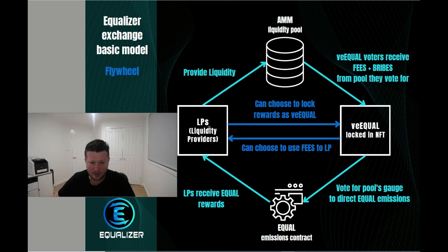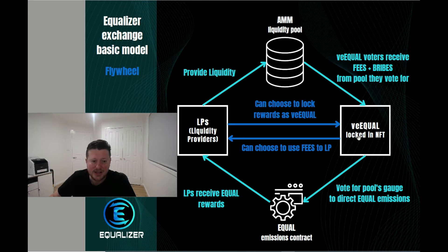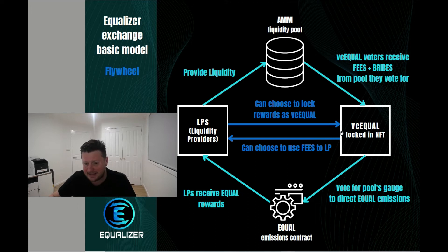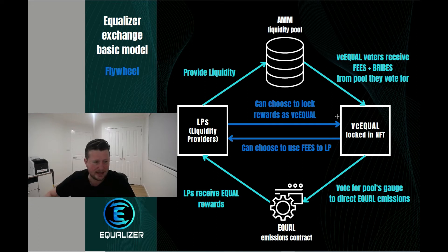You're starting to really get a flywheel working from multiple angles. The fees coming through from the automated market maker are actually in the denominations of whatever pair you're voting on. By voting on that pair you get the fees back, you can then lock them into liquidity yourself, get more Equal tokens, lock them back getting more, and again get the fees for locking. So you can start to see how you can keep yourself within the ecosystem and have multiple ways to make an income from this.